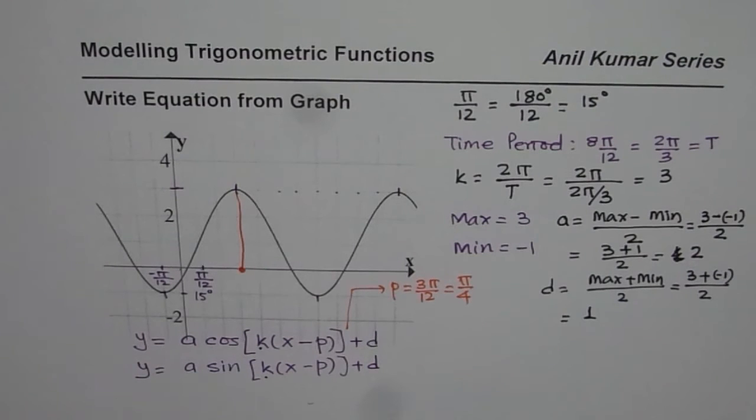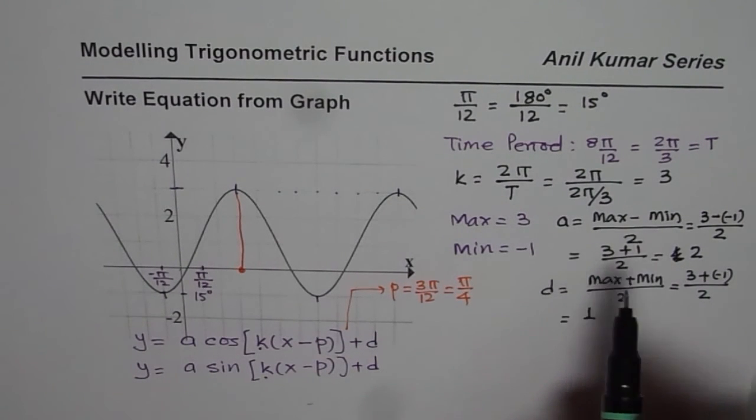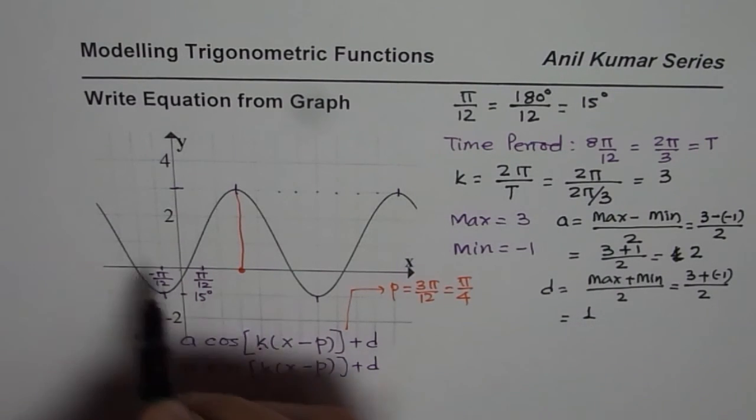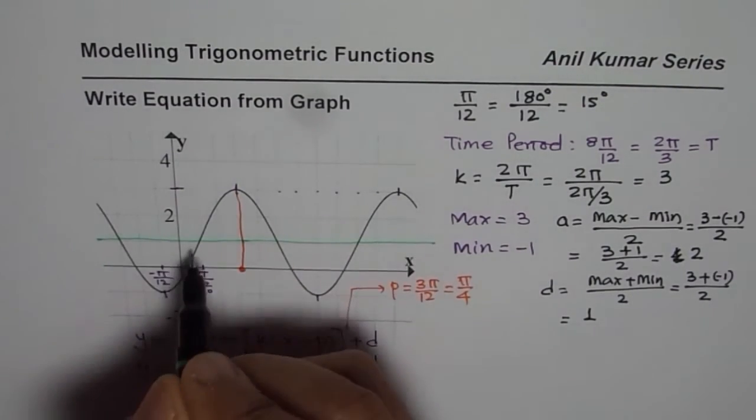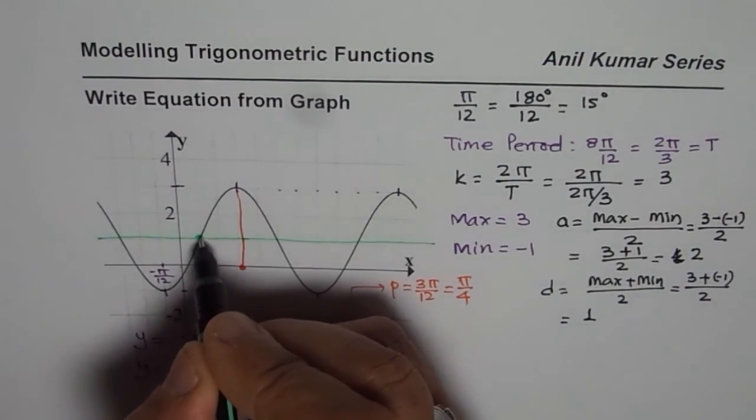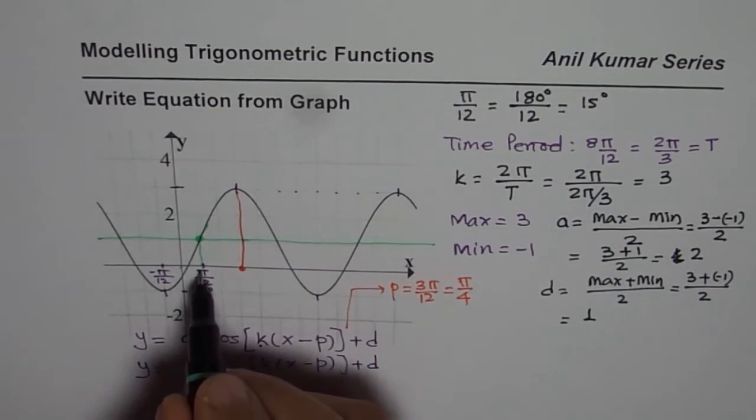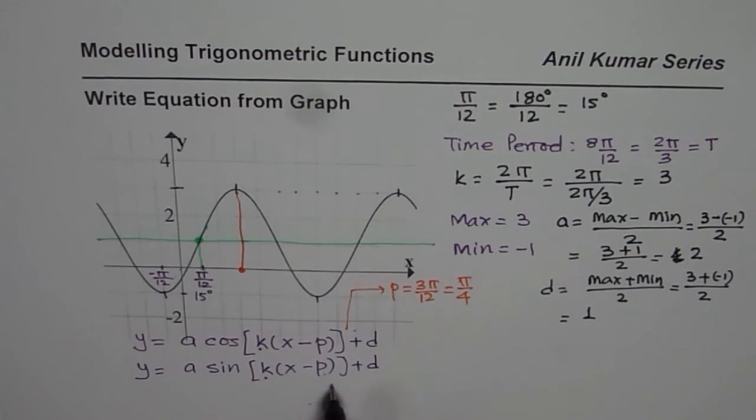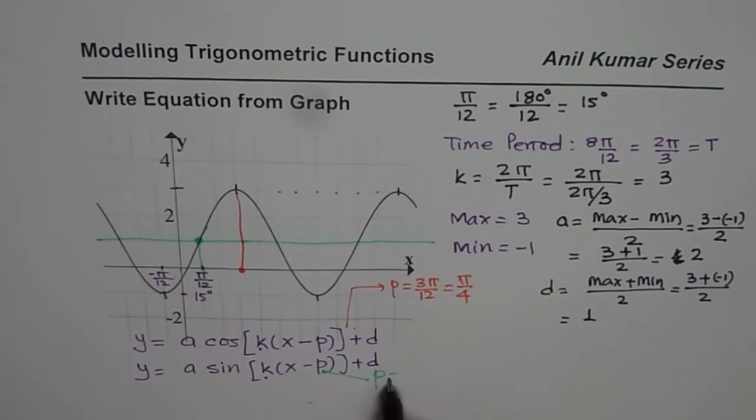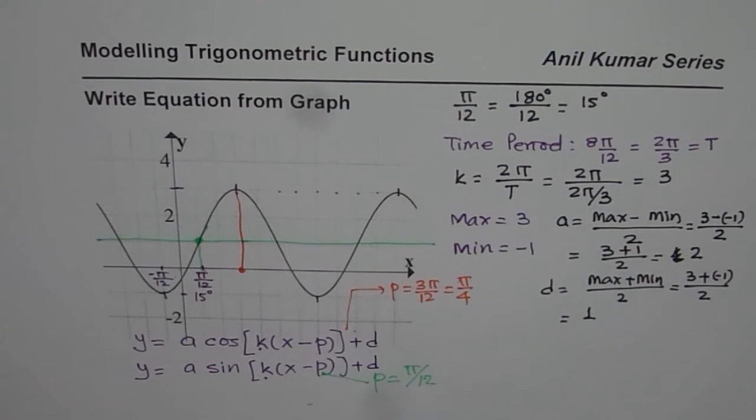As far as the sine function is concerned, sine function starts from the axis going upwards. Now the axis for us is the d value which is at 1. So let us draw the axis here. This value going upwards marks the starting point for a sine function, and this value is π/12 units to the right. Therefore, p for sine function will be π/12.